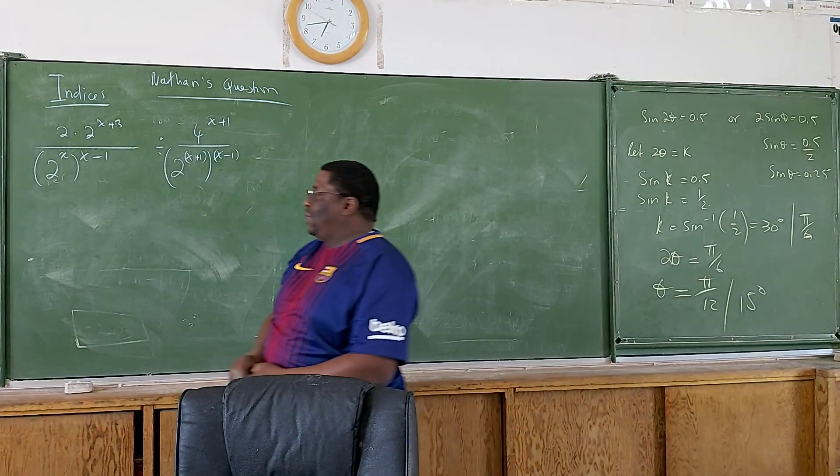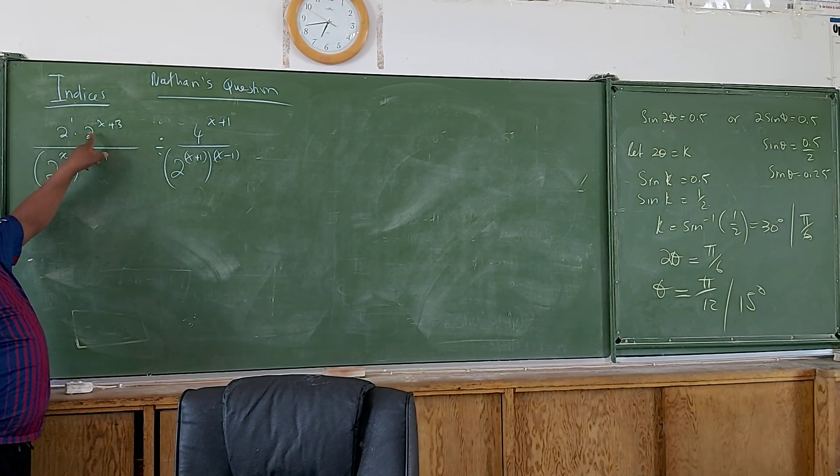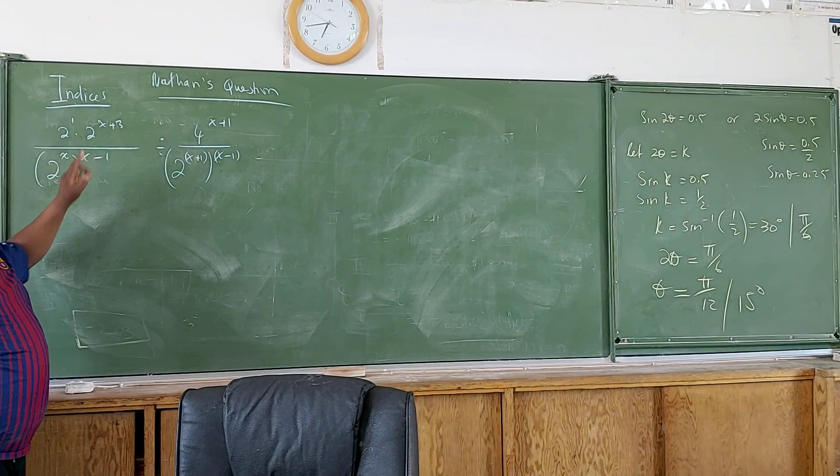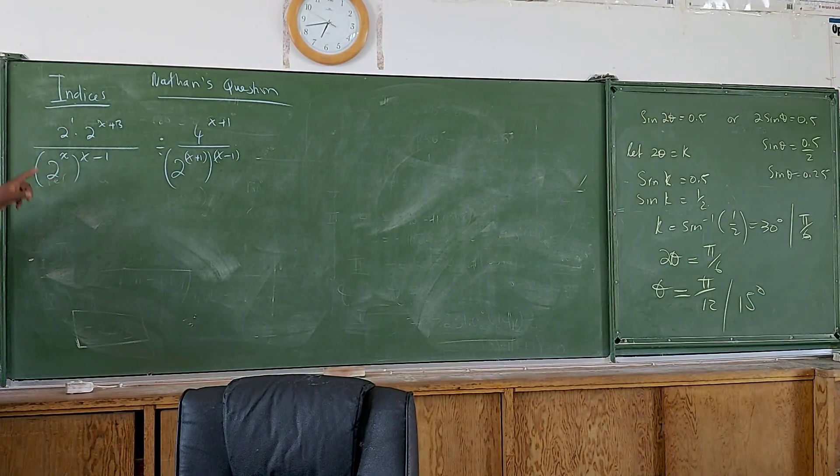Nathan's question, right. So that's 2 raised to the power of 1. These dots, they mean multiplication. The idea is for you to simplify this, I believe it, right.